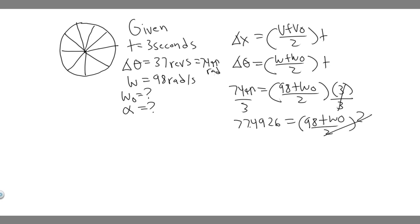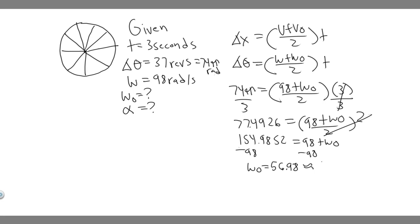Multiplying both sides by 2 gives approximately 154.9852. Then subtracting 98 from both sides: 154.9852 minus 98 equals omega zero. So omega zero is approximately 56.98, which we'll round to 57 radians per second. Now we have omega zero.